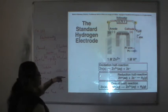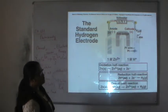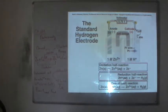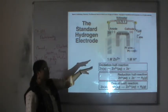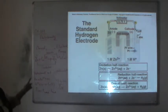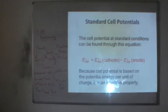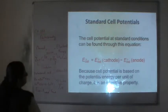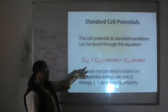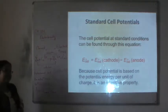When an electrode is attached to the standard hydrogen electrode, we can calculate the standard reduction potential for that electrode system. For example, when a zinc electrode is attached to the standard hydrogen electrode, the zinc standard reduction potential is measured as minus 0.76 V.